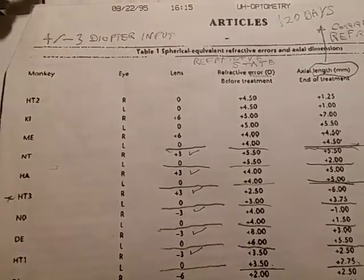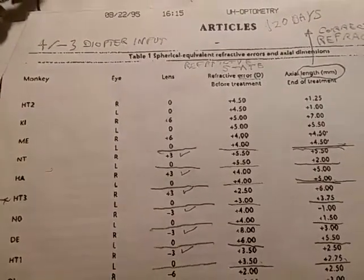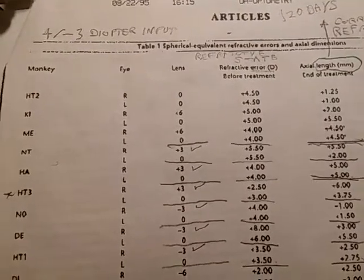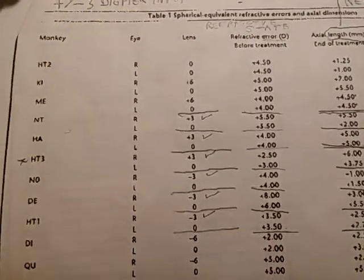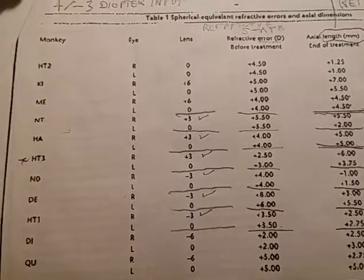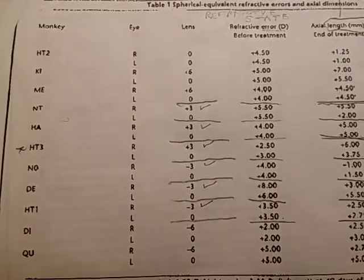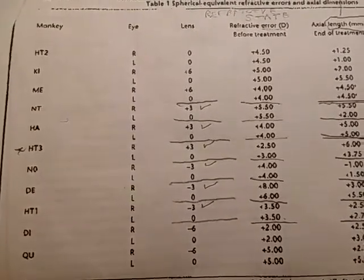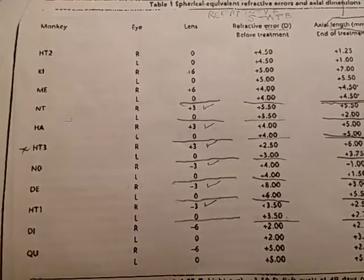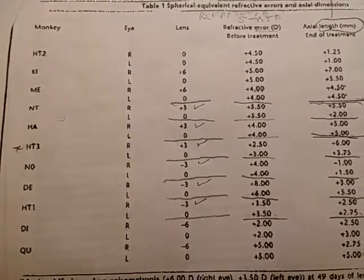The basic study was done for about 120 days and what was done is they put a plus 3 on one eye and zero on the other, then a minus 3 on the other. The refraction was measured at periodical intervals.